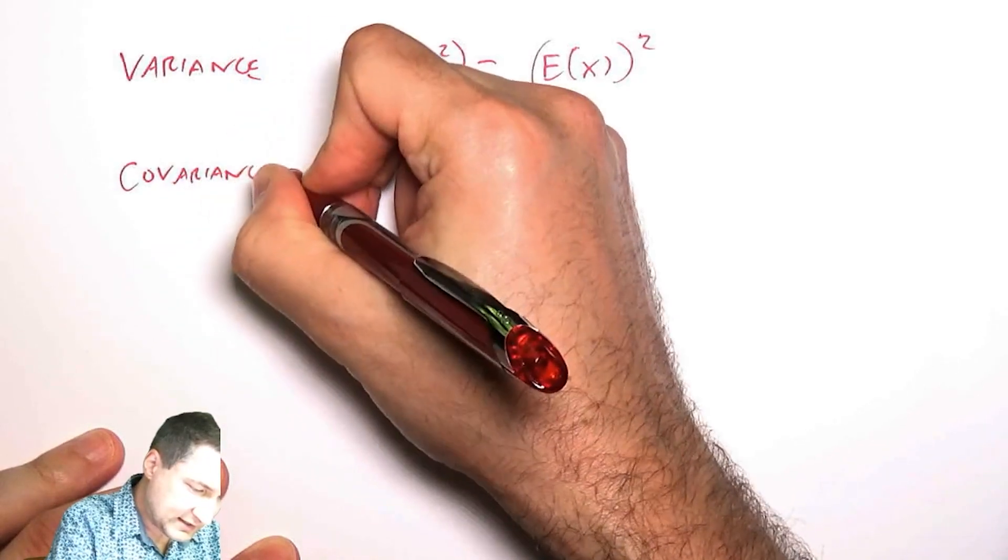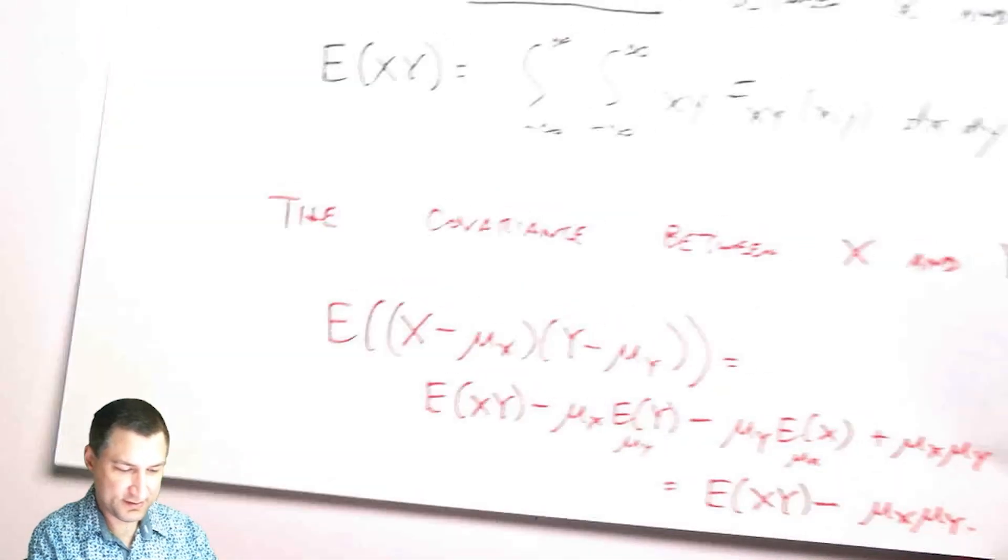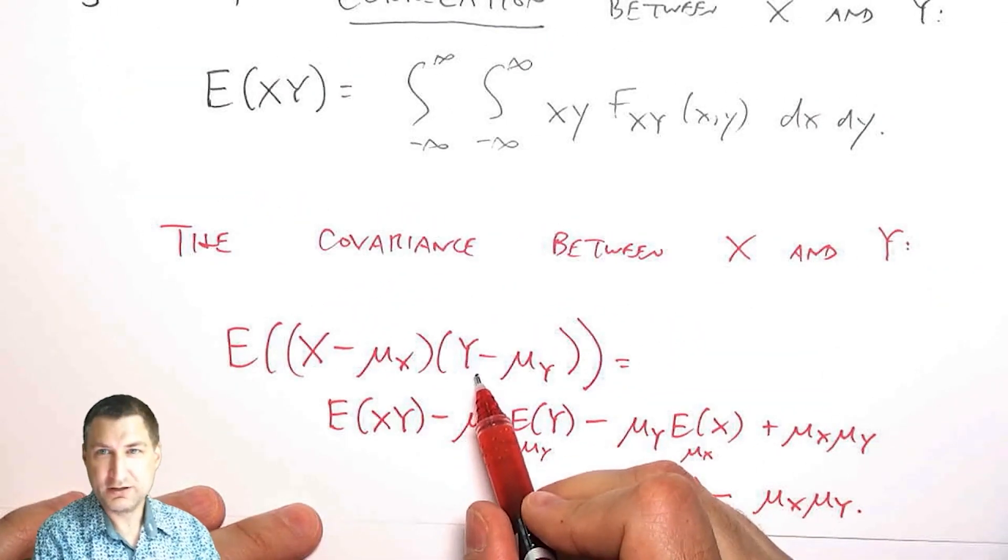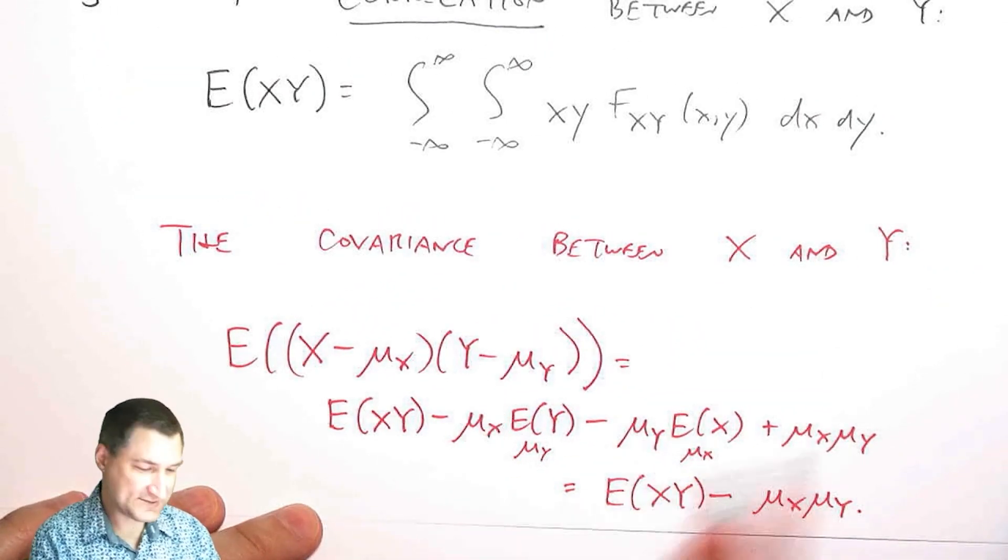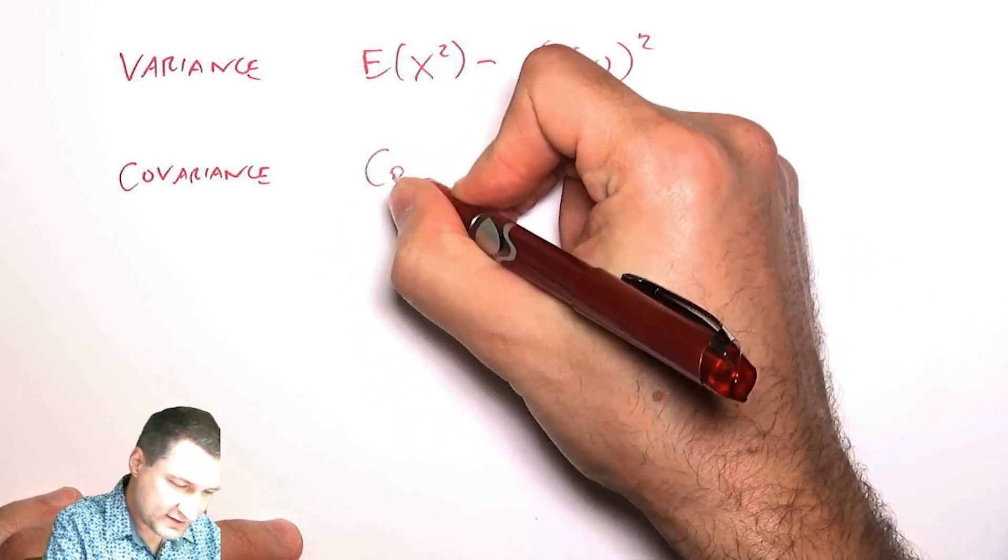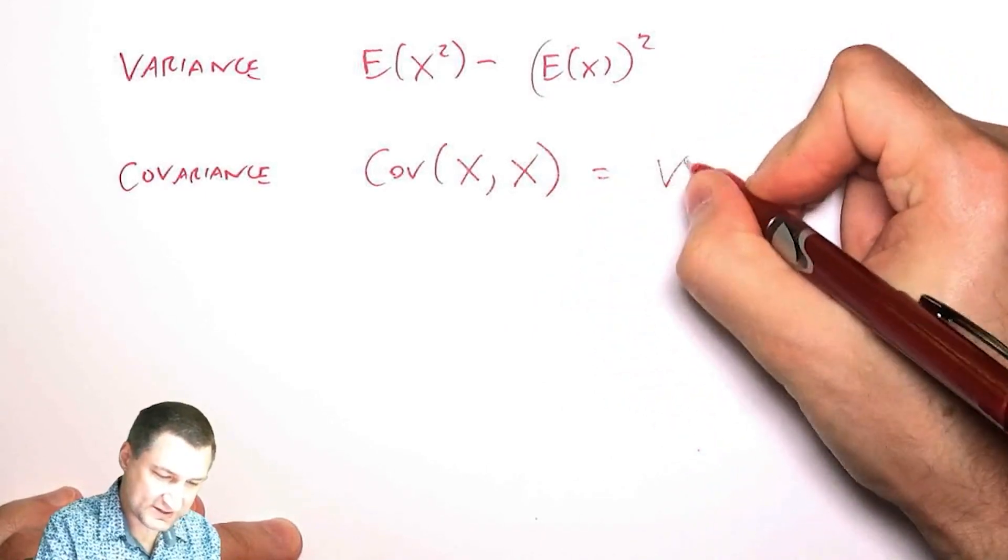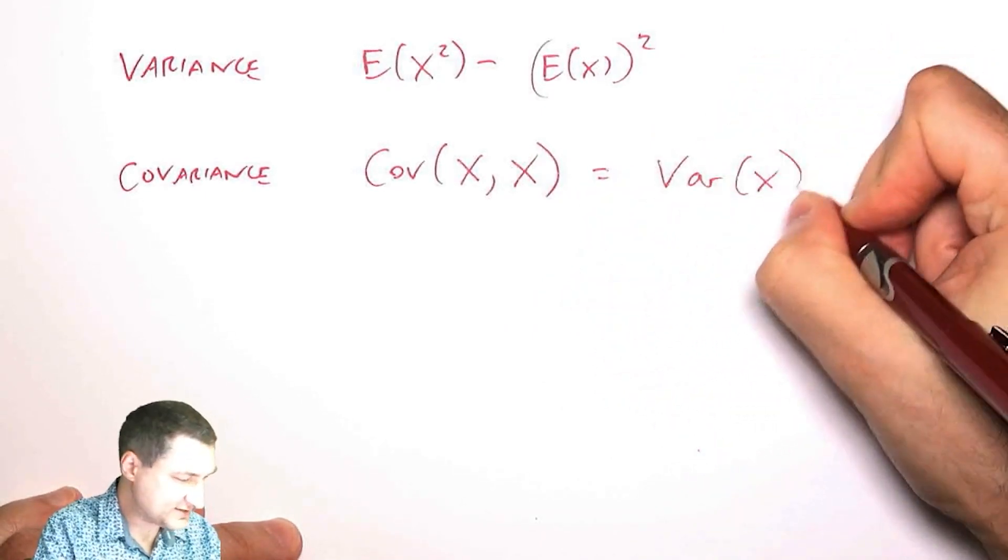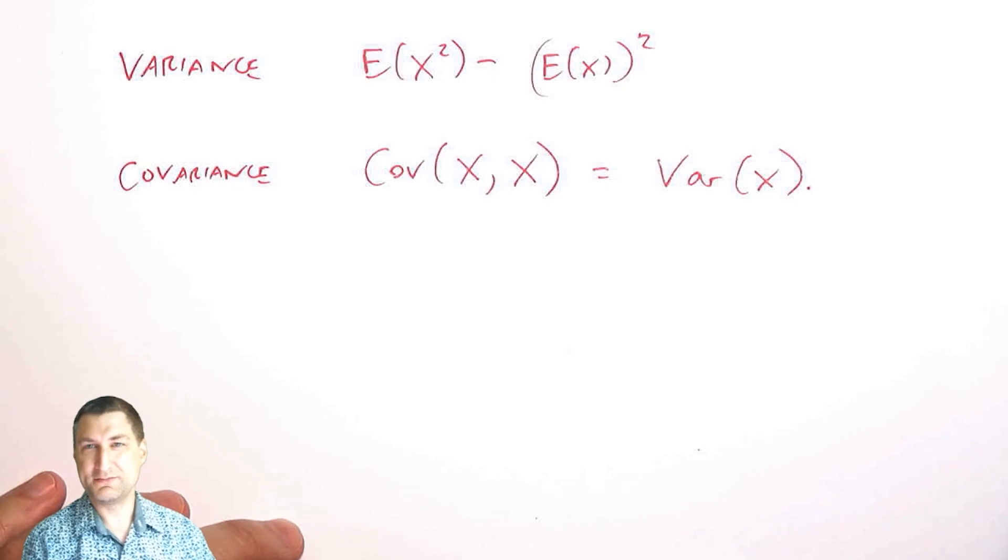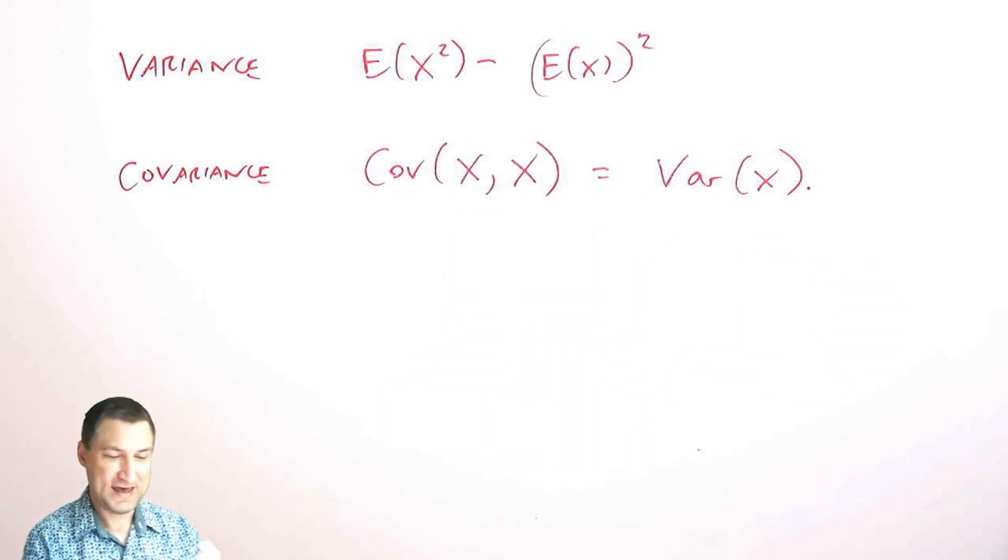So if I have the covariance of X against itself is basically the same as the variance of X. So it makes sense that we call this the covariance because it's like kind of X varying against something else. So critical concept.